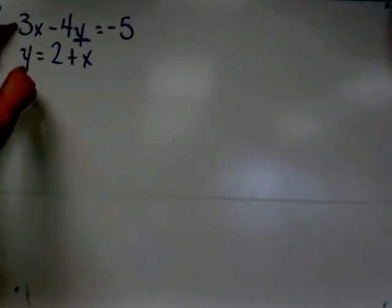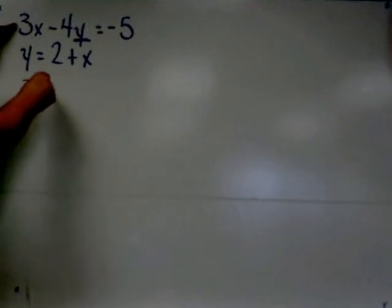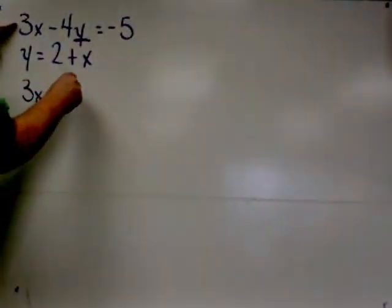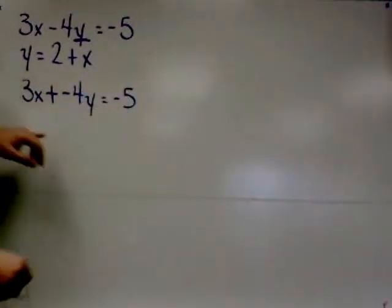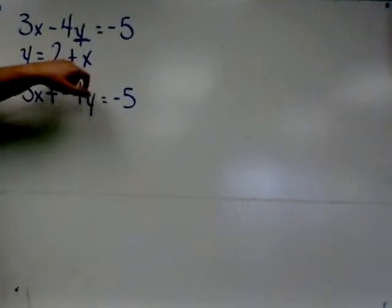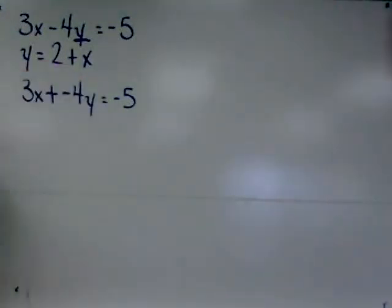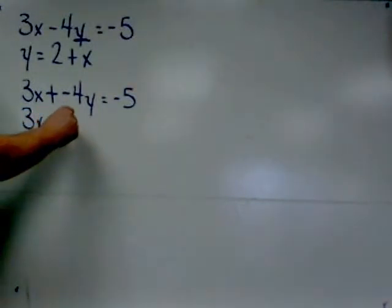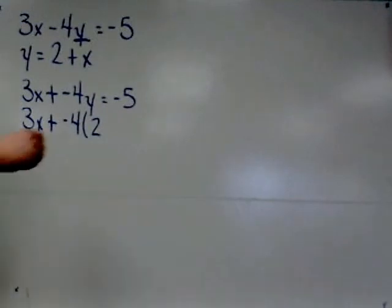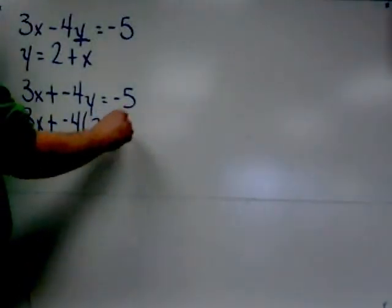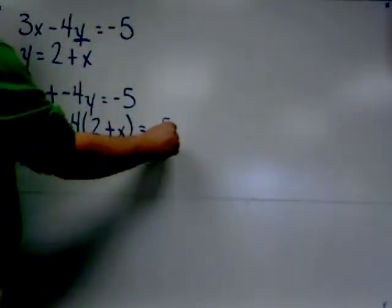So the first equation will now read 3x plus negative 4y equals negative 5. But y also needs to be changed into 2 plus x. So we'll actually read 3x plus negative 4 times parentheses 2 plus x, close parentheses, equals negative 5.